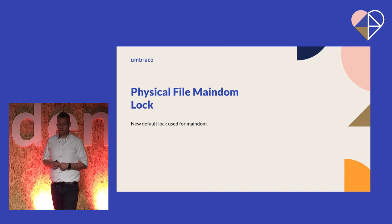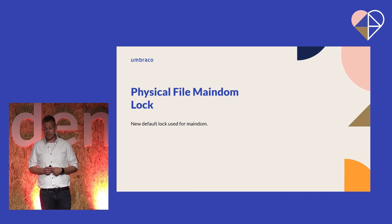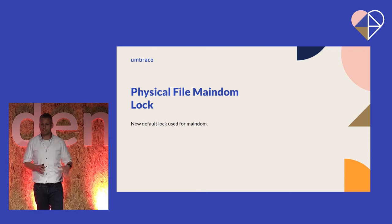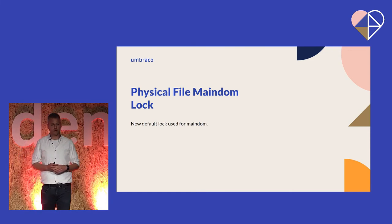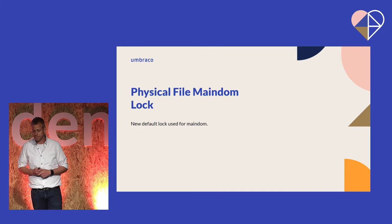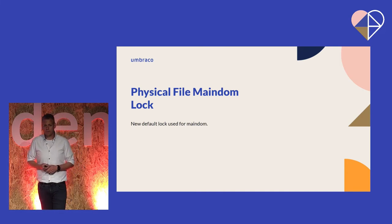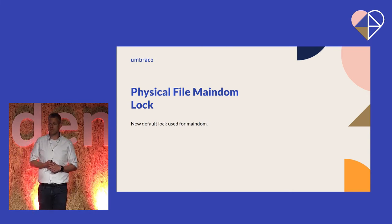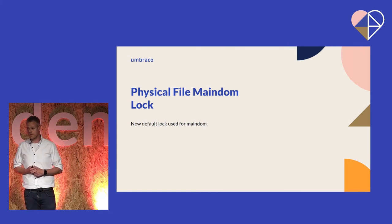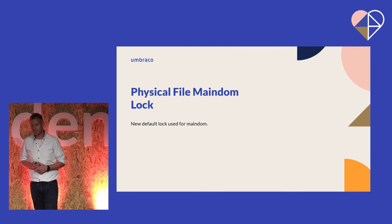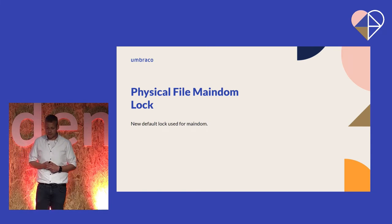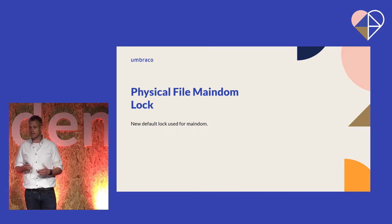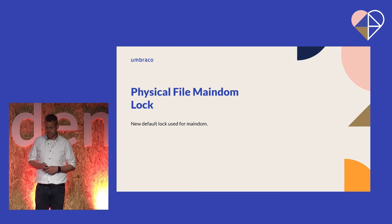We also introduced a new MainDOM lock. MainDOM is an internal concept in Umbraco that we use to ensure only one instance is locking files on disk. In Umbraco 9, we used the named semaphore lock on Windows, but named semaphores are not available on Linux or on App Services on Azure. So we used a SQL one. Now we introduced a file-based, physical file MainDOM lock that is the same on all platforms and is the default.